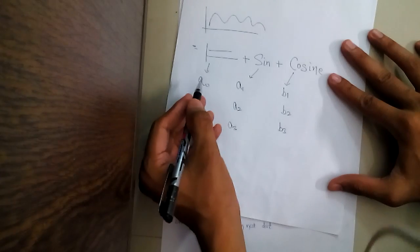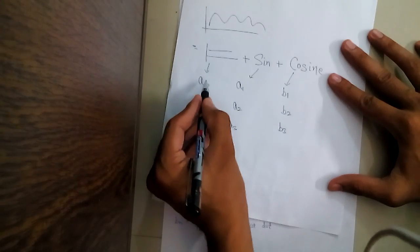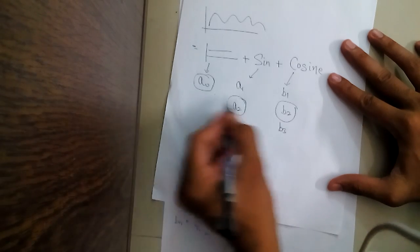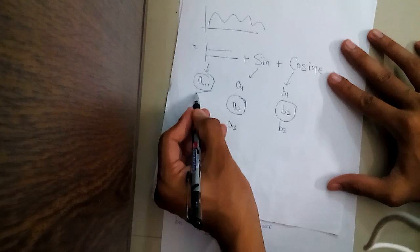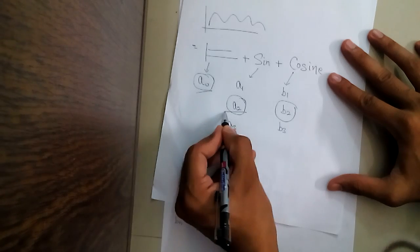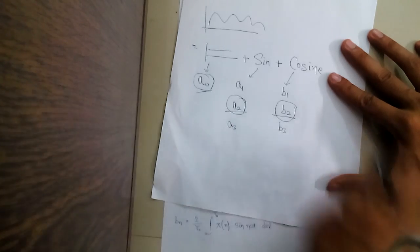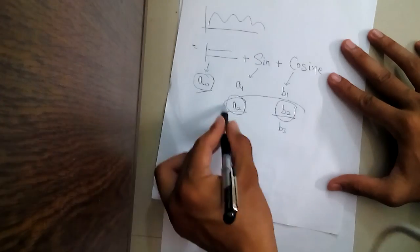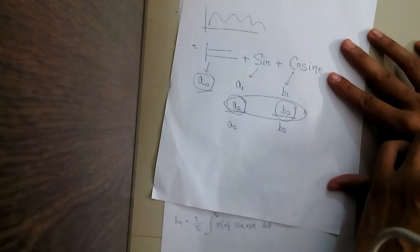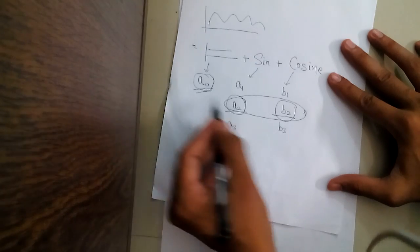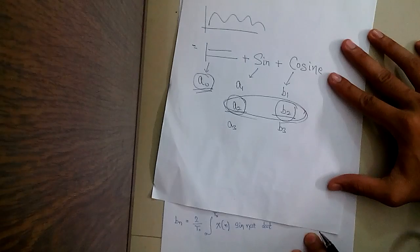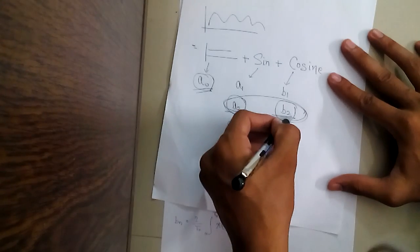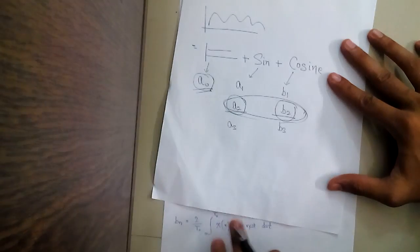So in any waveform, if I get A naught equal to 0, A2 equal to 0, and B2 equal to 0, that means I do not have any DC component, I do not have any second harmonic sinusoidal component, and I do not have any second harmonic cosine component. Ultimately, I do not have any even harmonics in that waveform — no DC component, neither any second harmonic component. So if I prove A naught = 0, A2 = 0, B2 = 0, my second harmonics will not be present in that waveform.